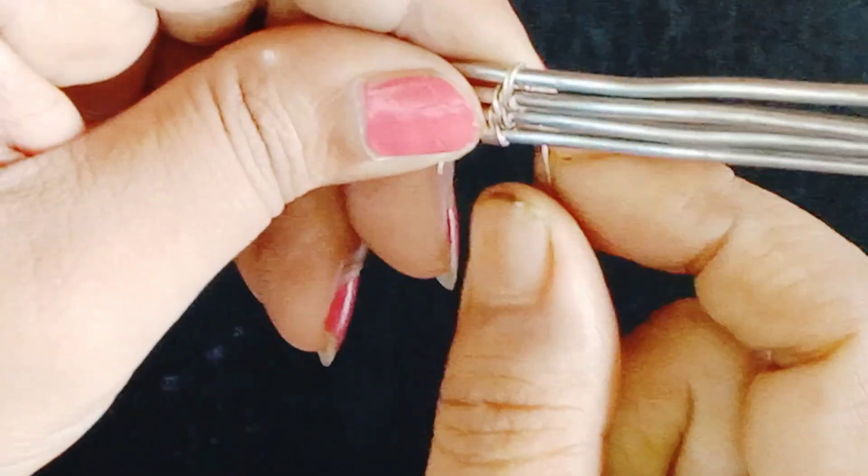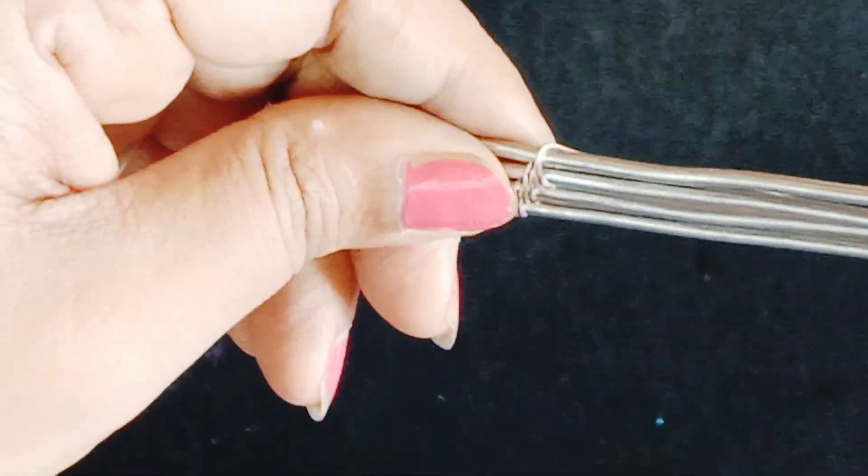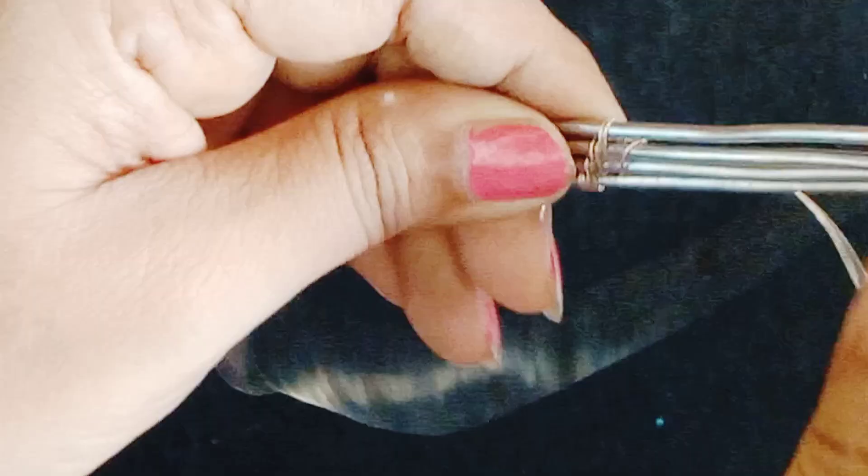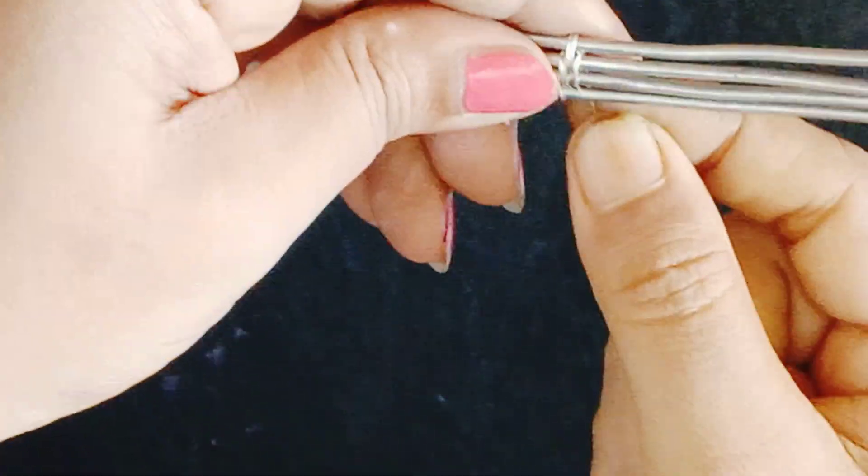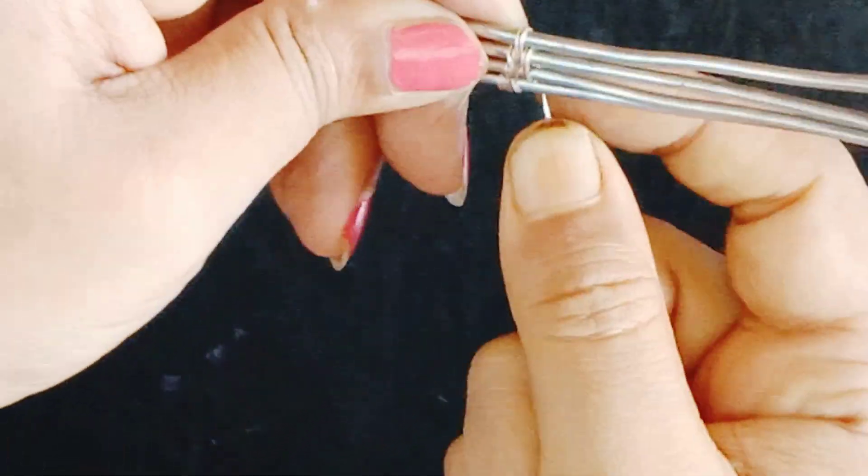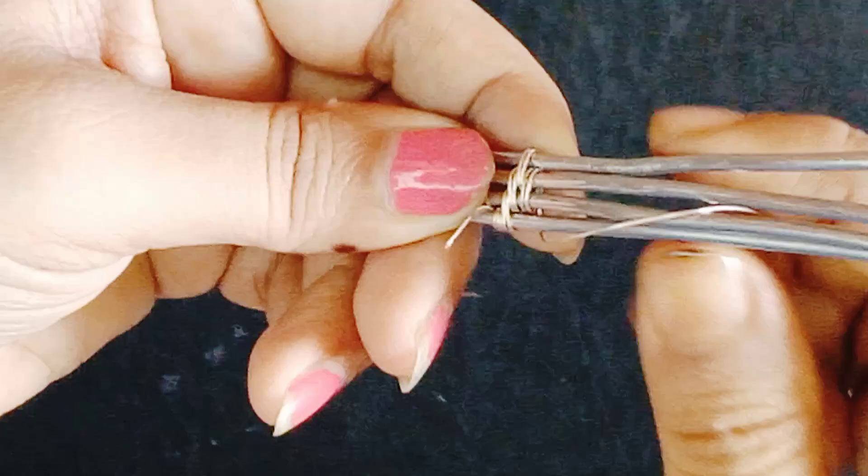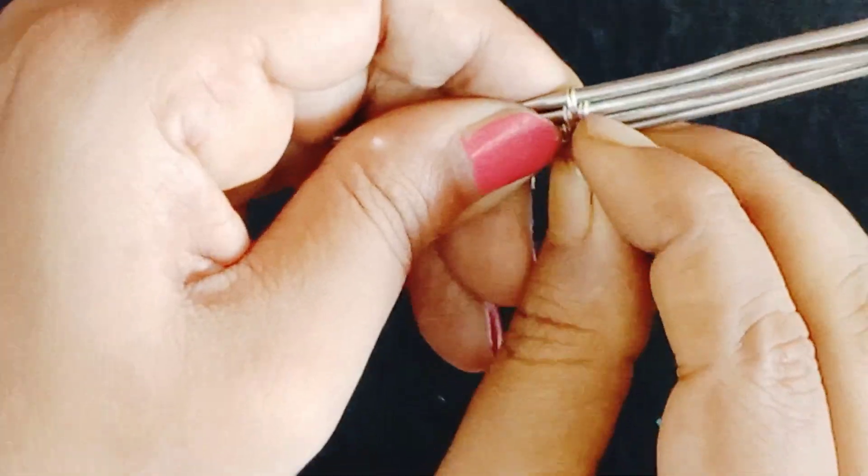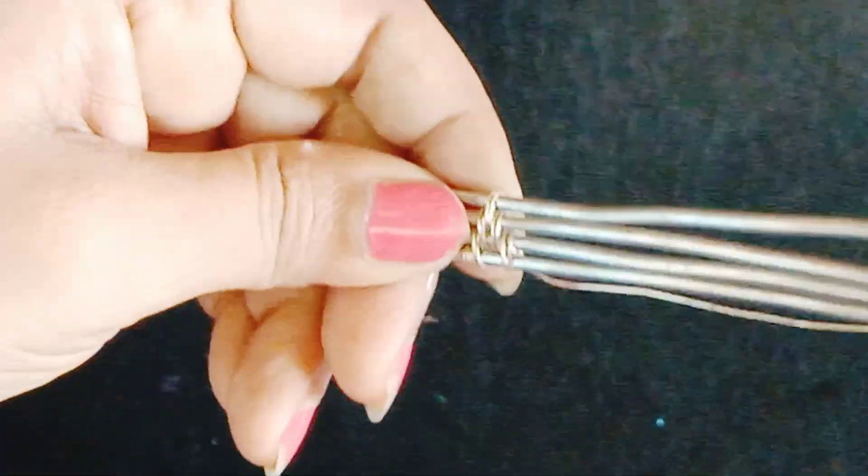Now I'm wrapping second and third wire two times and then first and second wire two times. In this way I'm making a temple-like structure here. After making this, just wrap the first wire two times and then repeat the process.